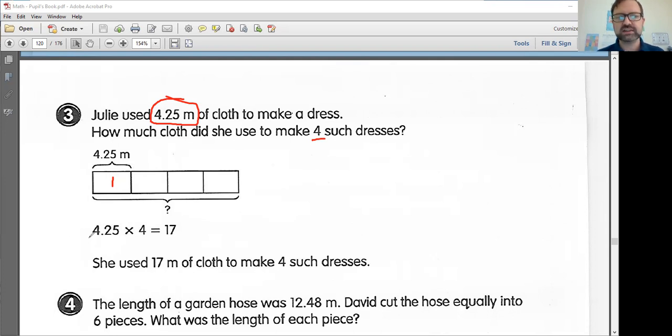4.25 times 4 equals 17. Make sure you know how to multiply decimals. It's the same thing. You can kind of just pretend that this decimal point is not there and just bring it down into your answer column. She used 17 meters of cloth to make four such dresses.